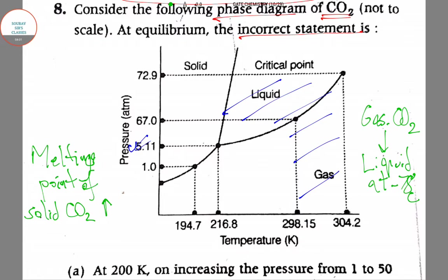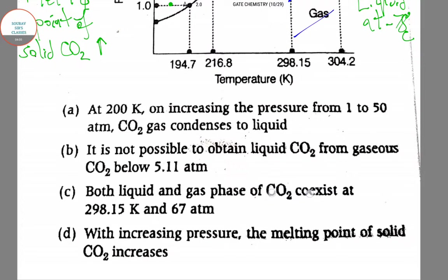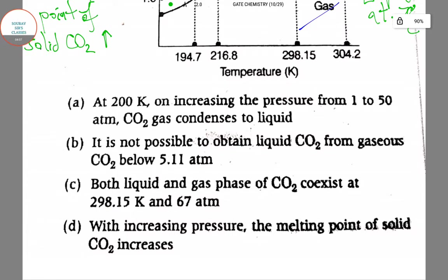So now coming to our options, we can see that the first statement that is at 200 kelvin on increasing the pressure from 1 to 5 atm, CO2 gas condenses to liquid. This option is the incorrect option, that means this is the right answer.